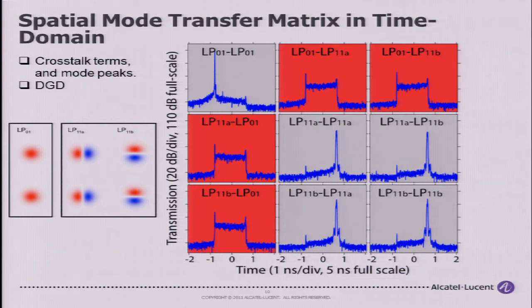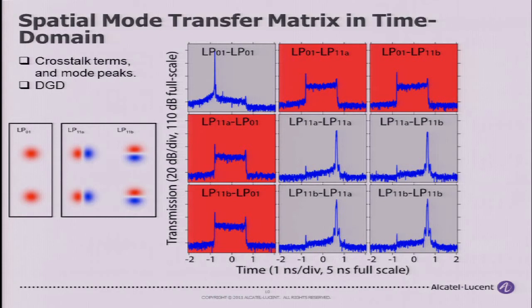This type of multiplexer is nice because you can right away start to look at the modal crosstalk characteristics of fiber. This is an actual measured mode transfer matrix of a fiber in the time domain. The top cell is the LP01 to LP01 mode transmission; the bottom four cells are the transmission between the LP11 modes. You can see a strong peak that arrives at a different time for 01 and 11, corresponding to the DGD difference between the two mode groups. Within mode groups there's strong coupling, and crosstalk between the 01 and 11 groups appears as a plateau in the red cells.